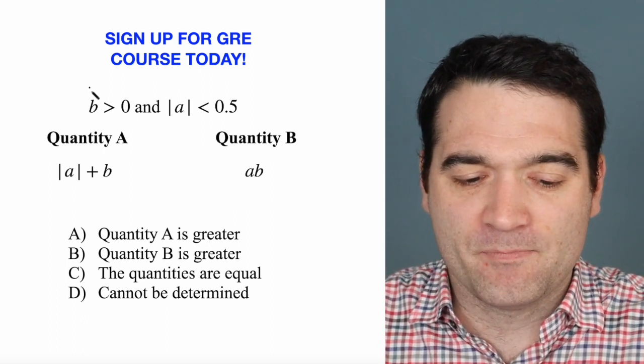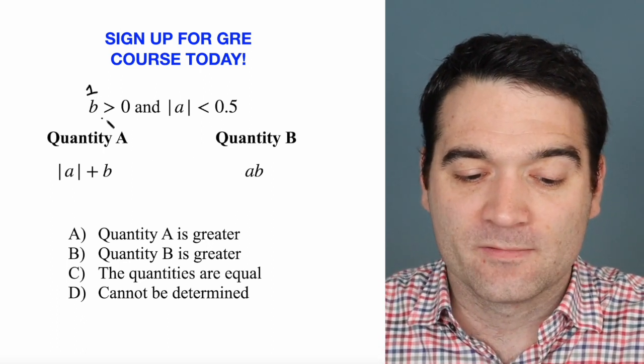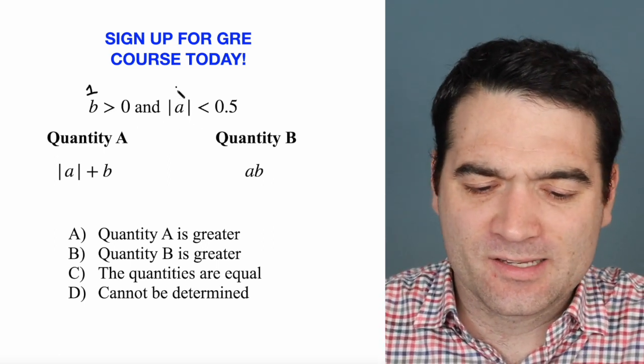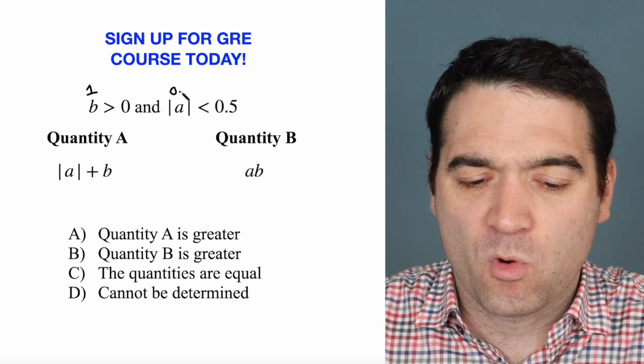Why don't we say that B is equal to 1, something greater than 0. And we'll say that A is 0.25.